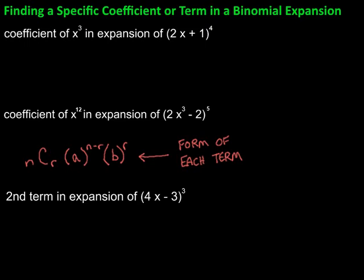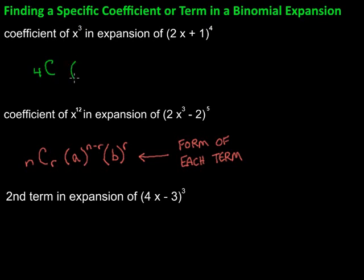Let's take a look at this first example. We want the coefficient of x cubed in the expansion of this binomial. We can use the general term formula and fill in what we know right away. The n is 4, so it's going to be 4C something. We don't know r yet. We do know the a and b: the a is 2x, and the b is 1.